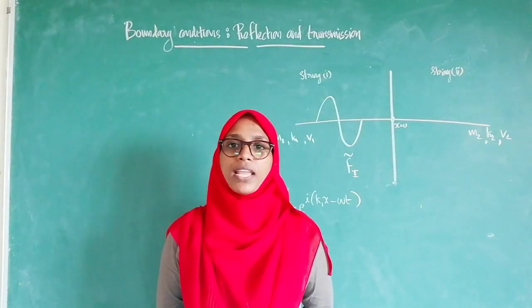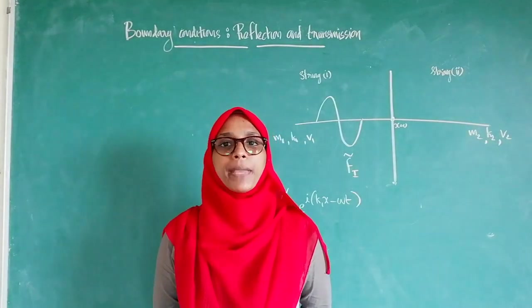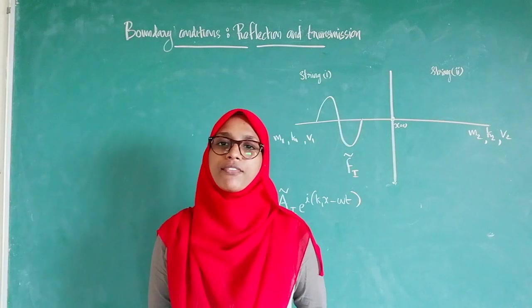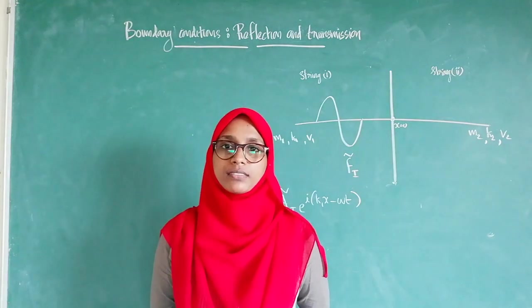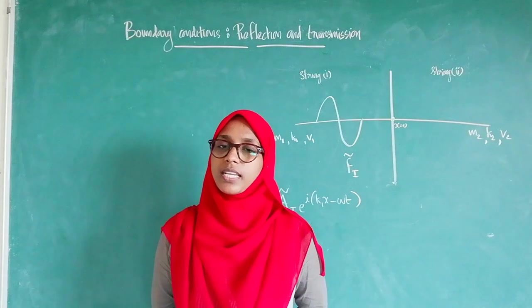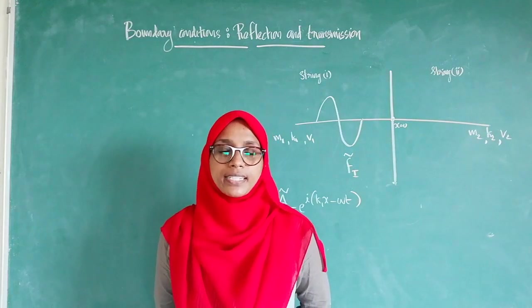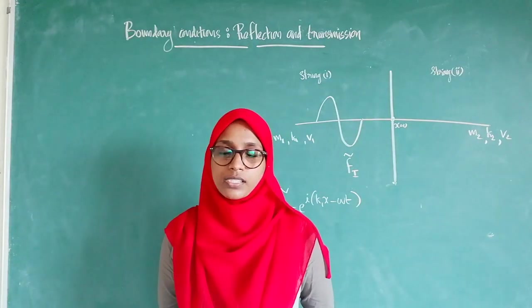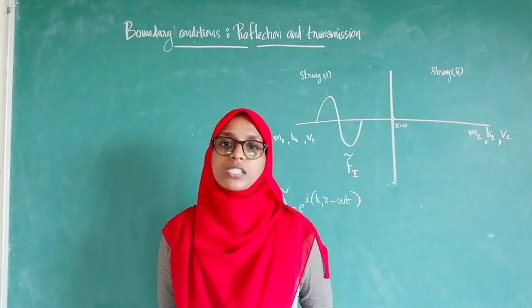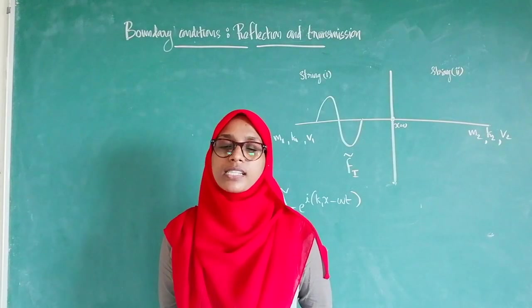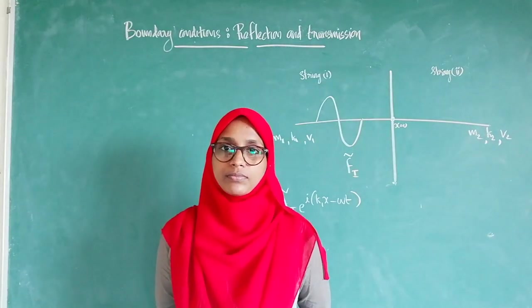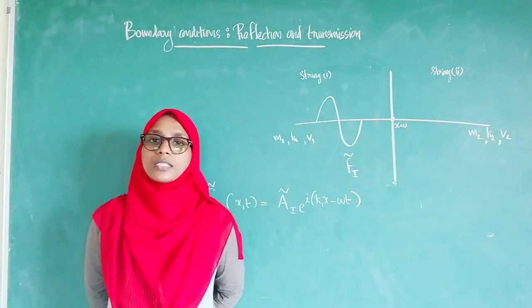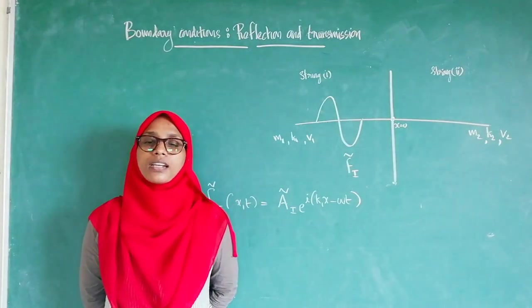The propagation of a wave mainly depends on the boundary conditions through which the wave is travelling. To explain this theory, we can consider a wave propagation through two strings in which one end of a string is tied to the other. In this case, the tension at both strings are the same.